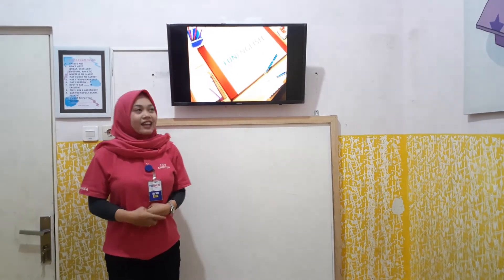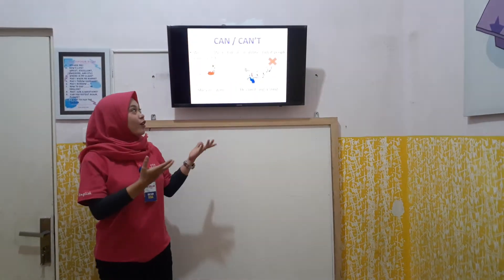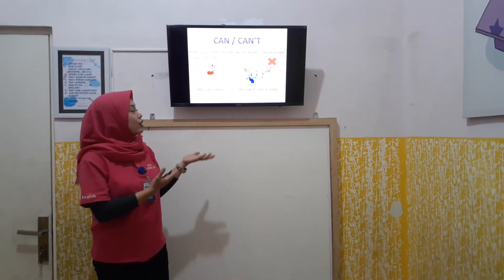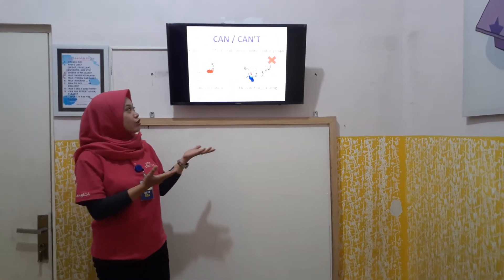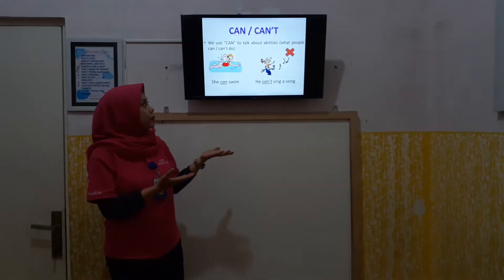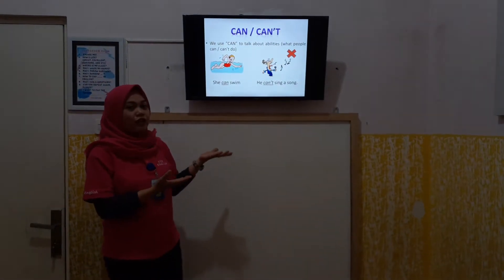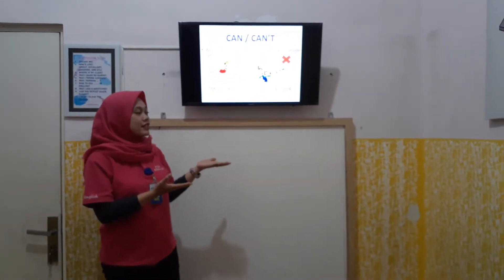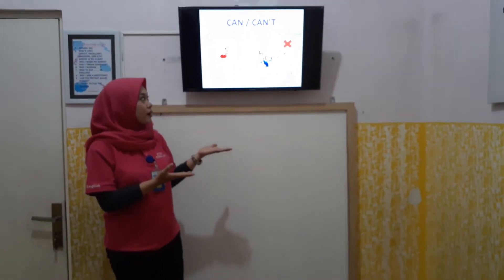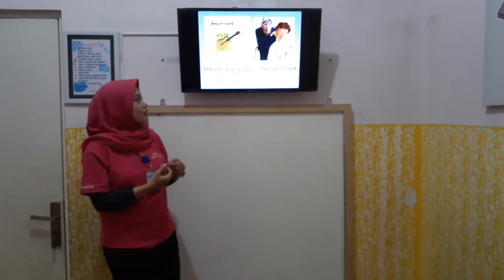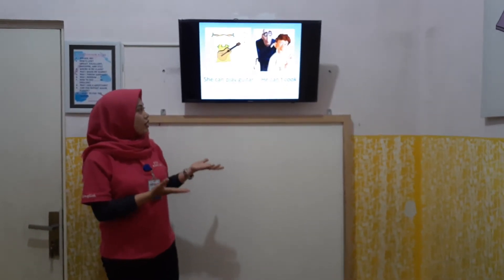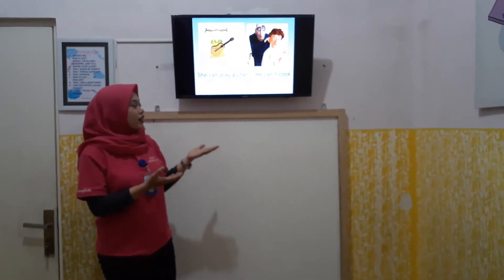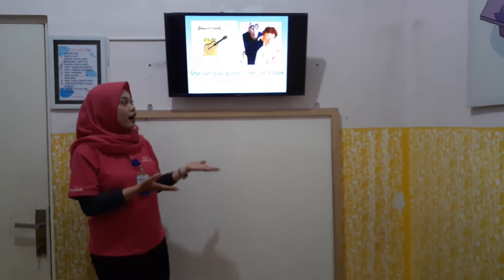We are going to learn about can or can't. We use can to talk about abilities — what people can or can't do. For example: she can swim, he can't sing a song, she can play guitar, he can't cook.